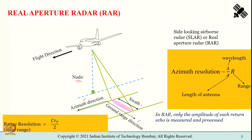Shown here are also the expressions for azimuth resolution covered in earlier lectures: it is lambda times r divided by d, where lambda is the wavelength, r is the range, and d is the length of the antenna. The range resolution — slant range — is c tau_p divided by 2, where c is the speed of light.